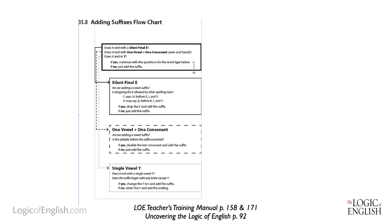One of the unique aspects of the Logic of English is the Logic of English suffix flowchart. This flowchart is a powerful tool for adding a suffix to any word in English, and adding suffixes to English words can be very difficult. I want to practice this skill using just the silent final E words and the words ending in a single vowel Y. I would encourage you to pull out the suffix flowchart found on page 158 of your teacher's training manual and use this to answer the questions with me.